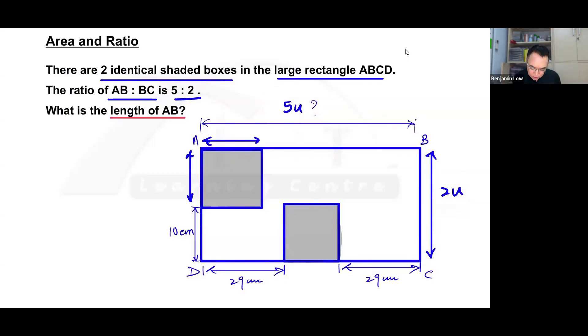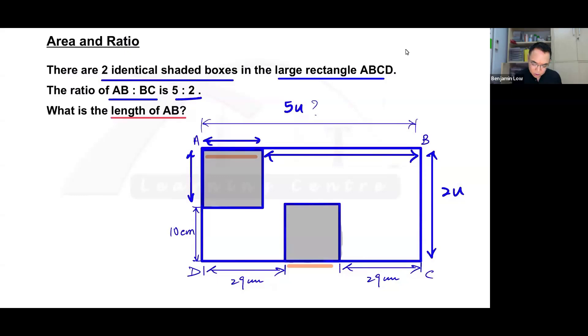Okay, now, since this is the equivalent, since this is equal to this, then naturally, we will know that the length of this portion would be 29 plus 29. Okay, so maybe we can do that as our first step. So 29 plus 29 will give us 58 centimeters. Okay, so let's just put here 58 centimeters. Okay, and we know that this is 10 centimeters.